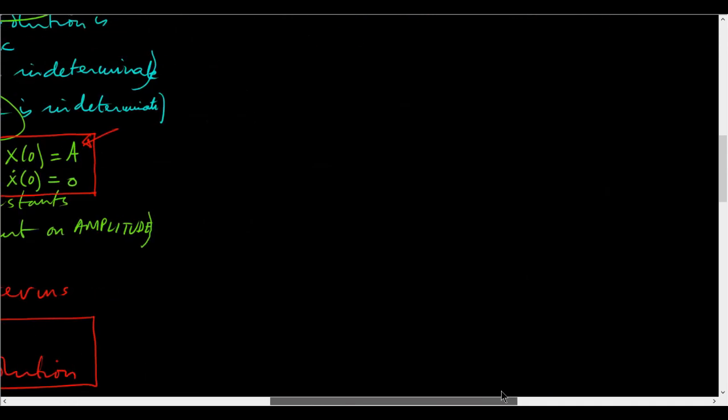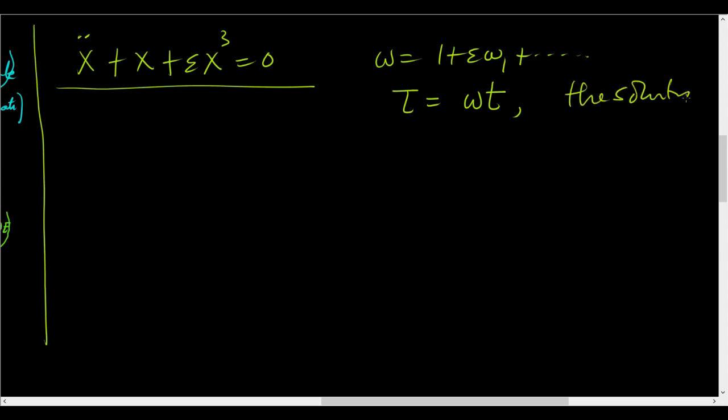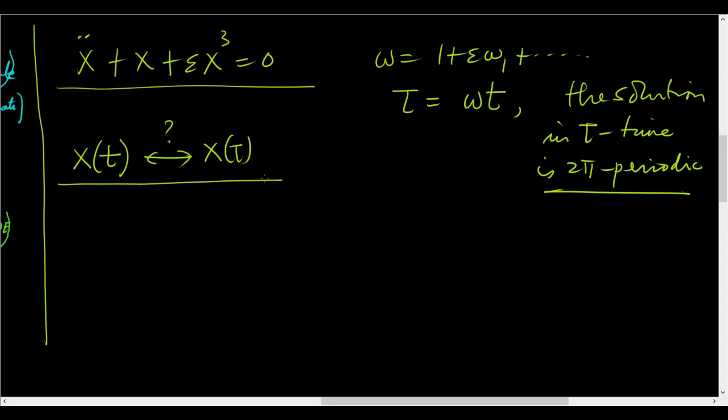So, whatever we need to do within the framework of the method in order to find the periodic solution we will do those things. So, we come here now and here is our system x double dot plus x plus epsilon x cube equals 0 and I will say omega is equal to 1 plus epsilon omega 1 plus dot dot dot and I will say tau equals omega t and I will say the solution in tau time is 2 pi periodic. The way we proceed is like this. X is a function of time but I am writing x as a function of tau later. How does this even work? To do this let me acknowledge that I am abusing notation.